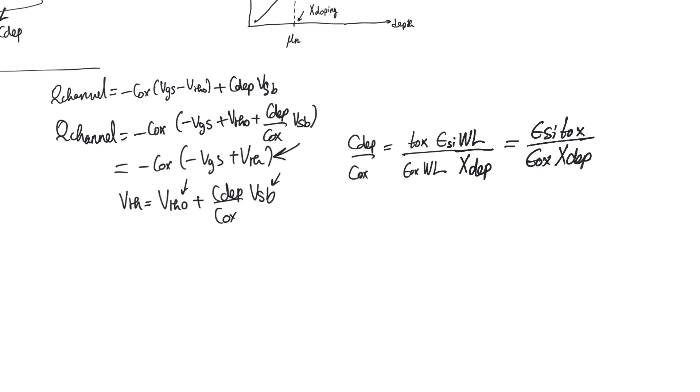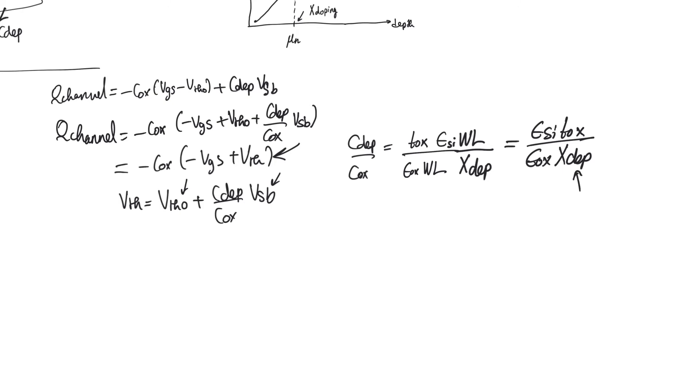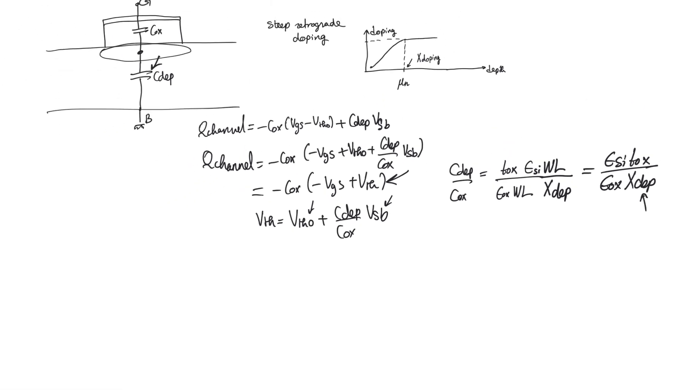Now this ratio in long channel transistors was dominated by the expression of X-depletion. The expression of X-depletion is very complicated because it's related to VSB. And when you pursue this a little bit deeper, it will give you the expression of threshold voltage with body effect that you are used to. But in steep retrograde doping, X-depletion is not actually that complicated of a function.